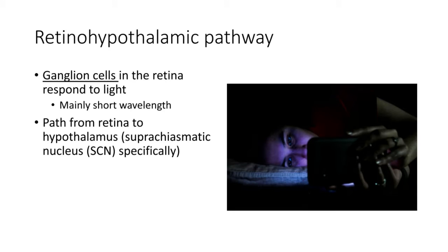The retino-hypothalamic pathway. This has a nice informative name. This is a pathway that goes from the retina to the hypothalamus. So the hypothalamus is involved in regulating our circadian rhythm and establishing that rhythm. Now it has to get some kind of an input to know when it's light and when it's dark.